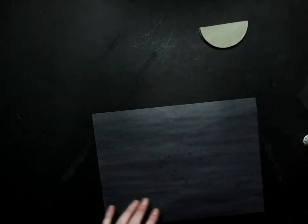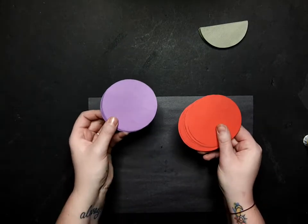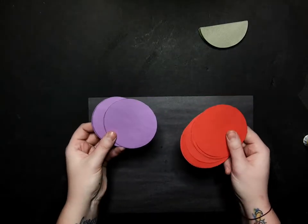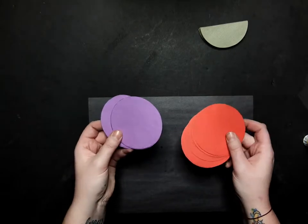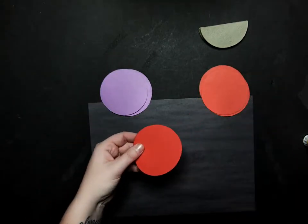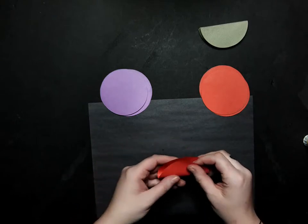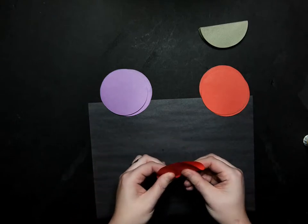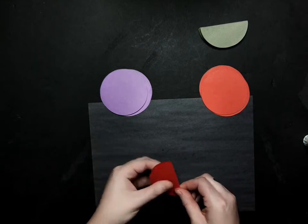In the meantime, I'm going to show you the process for making the alternating colors one. It's exactly the same, except we're going to use two different colors of paper. Now I have 10 red and 10 purple circles. We're going to just repeat the entire process. We're going to fold them all in half first and set them aside.